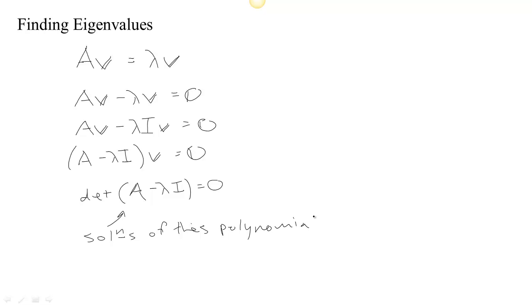Once we have the eigenvalues, then we can go and pick up the eigenvectors. So the solutions of this polynomial will be the eigenvalues. Let's look at an example here.